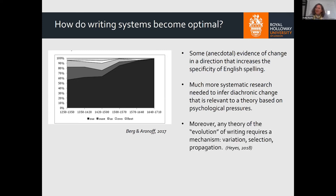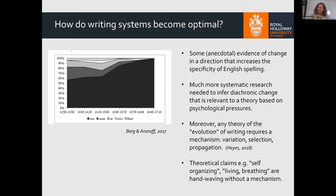If we want to talk about the evolution of a writing system, that requires specification of the mechanism. Theories of cultural evolution ask: where does the variation come from? What is the selection pressure? How is the result propagated? These are all questions a theory of spelling evolution would need to answer. When we see claims that English spelling has self-organized or that writing systems are living and breathing, those are hand-waving without a mechanism. There's a great deal of work to do to understand how spellings came to be.